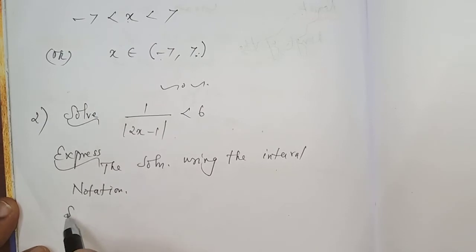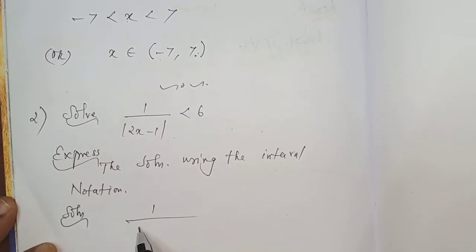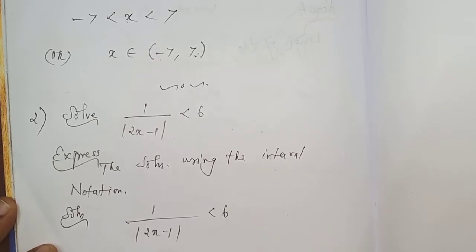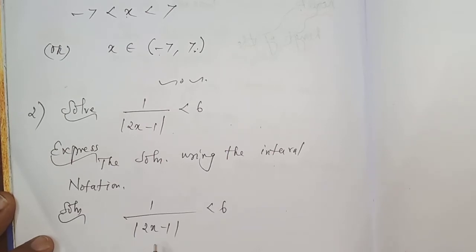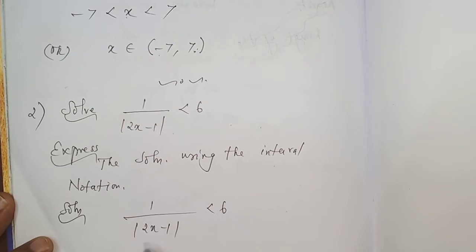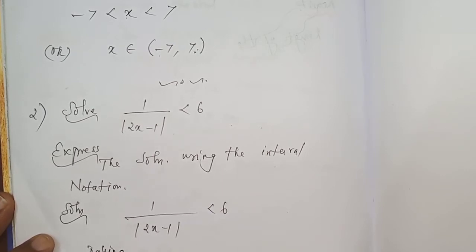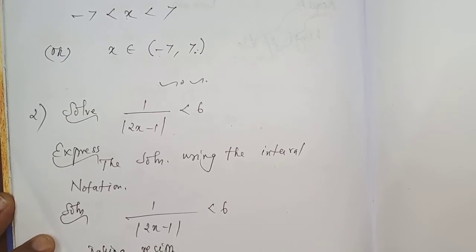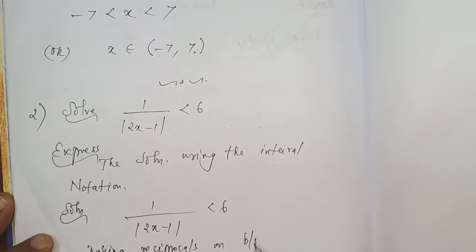Here is the question. Solution: 1 divided by modulus of 2x minus 1 which is less than 6. For getting that x in numerator, taking reciprocals on both sides or you can cross multiply. I am taking reciprocal on both sides.